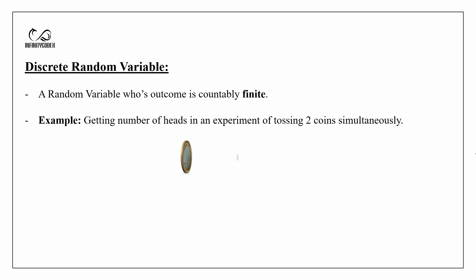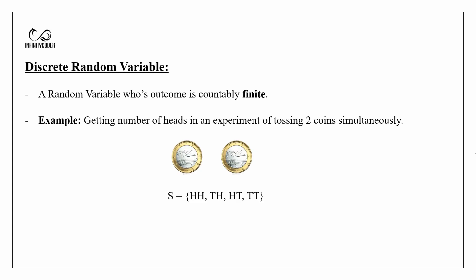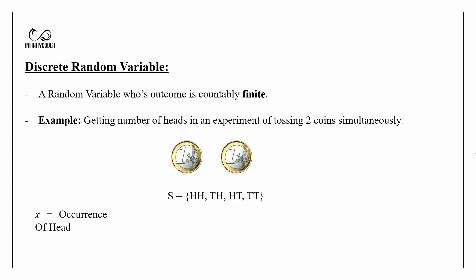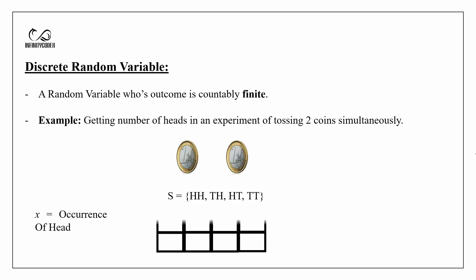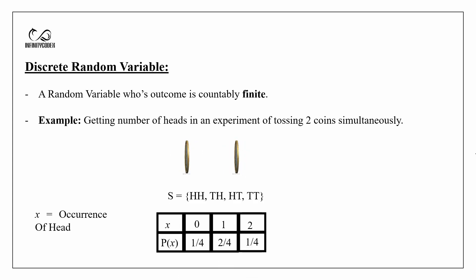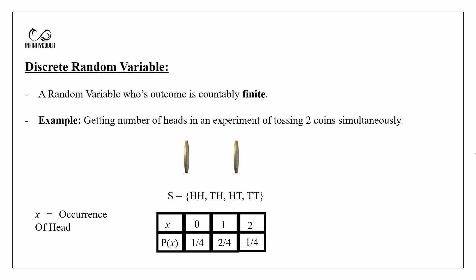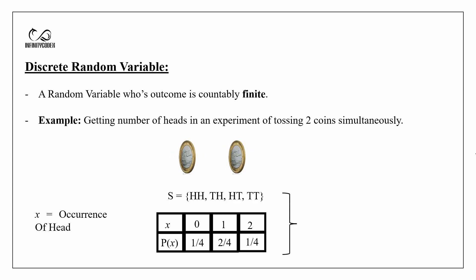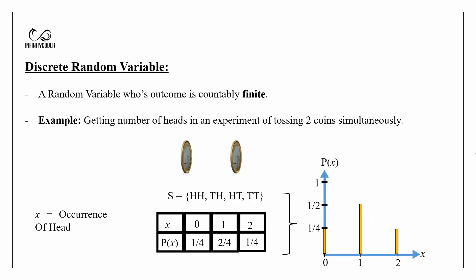So we toss two coins and the sample space, that is total outcomes, will be: head-head, tail-head, head-tail, and tail-tail. Our condition here is x which is the occurrence of heads. As we can see in the table, the probability of getting heads 0 times is 1/4, getting heads 1 time is 2/4 that is 1/2, and getting heads 2 times is also 1/4. If we plot this table we can see a graphical structure such as this.